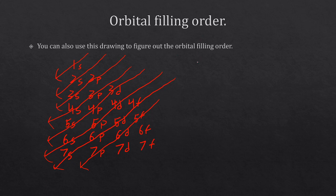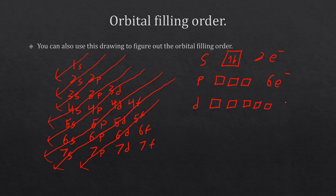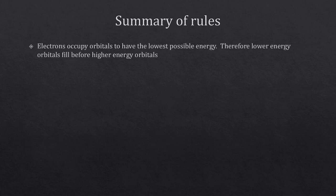It's also helpful to remember how many electrons each sub-level can hold. Since s only has one box and each box fits two electrons, s can hold two electrons. P has three boxes, so it can hold six. D has five boxes, so it can hold ten. F has seven boxes, so it can hold fourteen electrons.